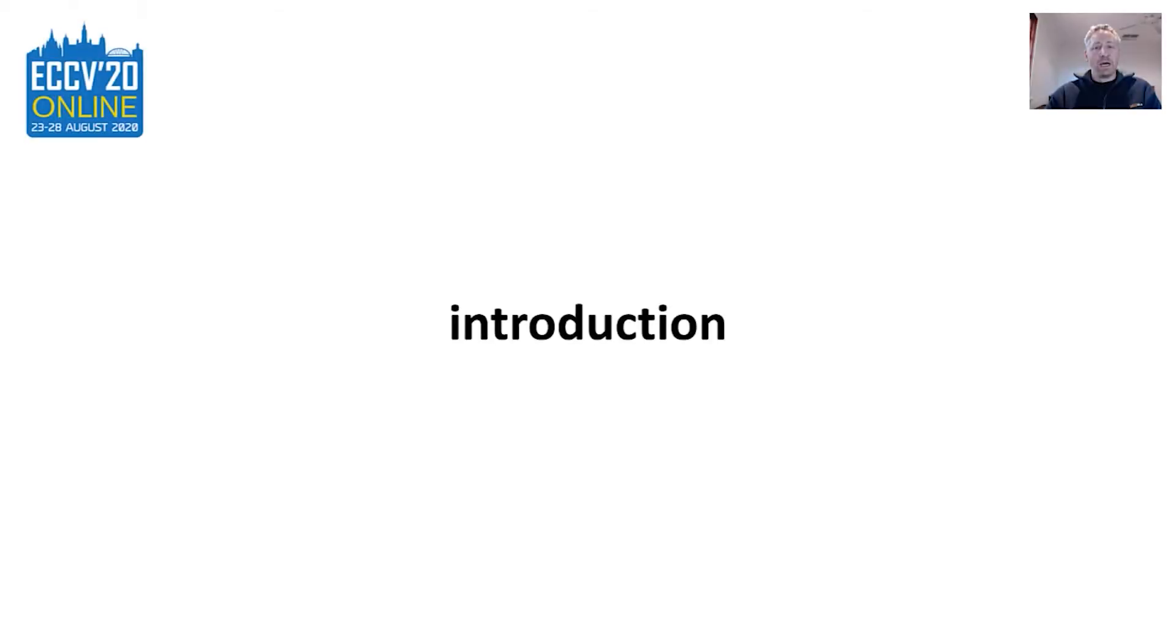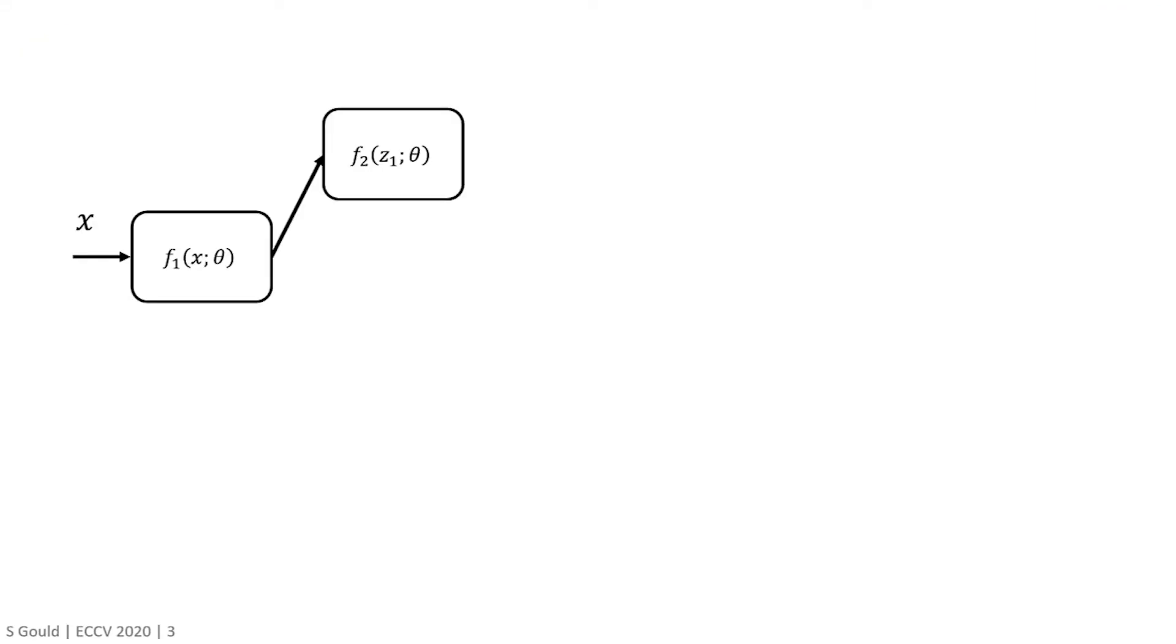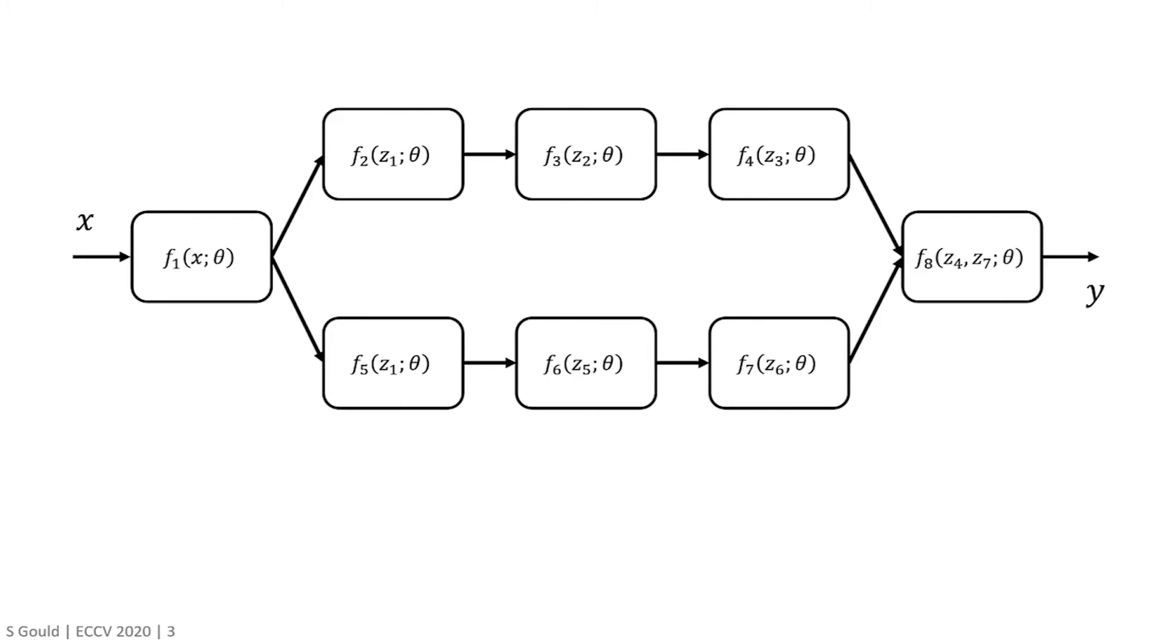So, without further ado, let's get started. I'd like to start by introducing three key ideas that will help set the groundwork for the remainder of the tutorial. The first idea is thinking of deep learning models, or deep neural networks, as a data flow graph, which defines how data is processed in the forward pass to arrive at some prediction or estimation.